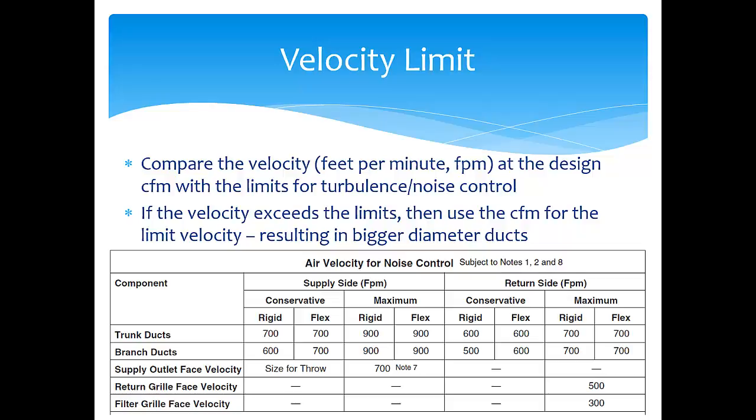If the velocity given by the slide rule for a particular combination of friction rate and room CFM exceeds the limits set by Manual D, then you use the room CFM combined with the maximum allowable velocity as your sizing metrics. The slide rule table also gives you the velocity limits for trunk and branch ducts, whether made of rigid or flexible material. That rounds out the basics of sizing the air distribution system.